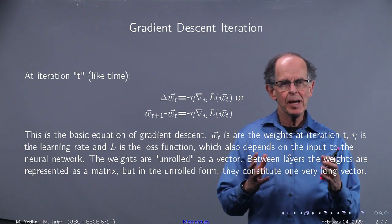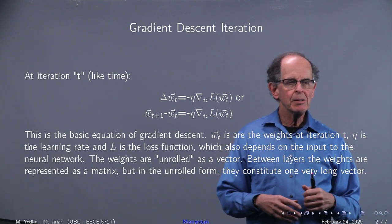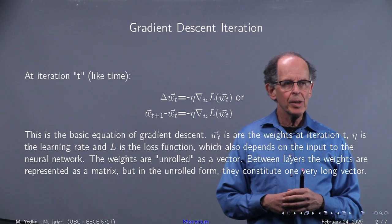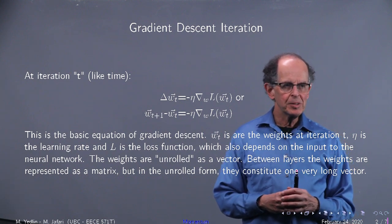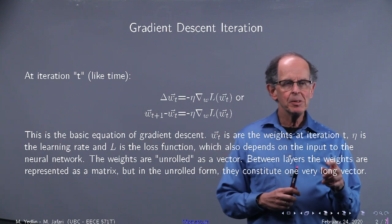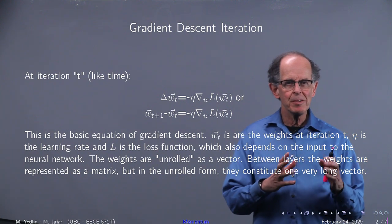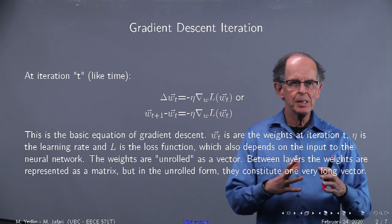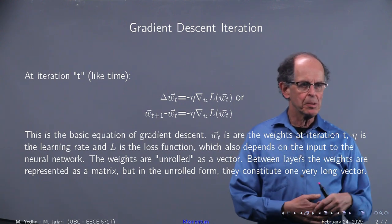Of course, we have a similar expression for the biases. They're not included here. We write out explicitly w of t plus 1 minus w of t is equal to stuff involving w of t. Now, t here is often used in papers rather than k and k plus 1 because it's thought of like time. It's actually the iteration number.